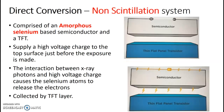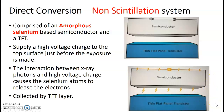Direct conversion. It doesn't use a scintillator. Anytime you get a question on an equipment test for CR, DR, or indirect/direct, if it has the word 'directly converted' in the question, it's direct conversion. Unlike indirect, which uses amorphous silicon, direct uses amorphous selenium — a semiconductor — and a TFT. A high voltage charge is applied to the top of the surface just before exposure. It takes those x-ray photons in, and the voltage charge causes the selenium atoms to release electrons, skipping the scintillator and the light step entirely, going right to the TFT where those pixels are.